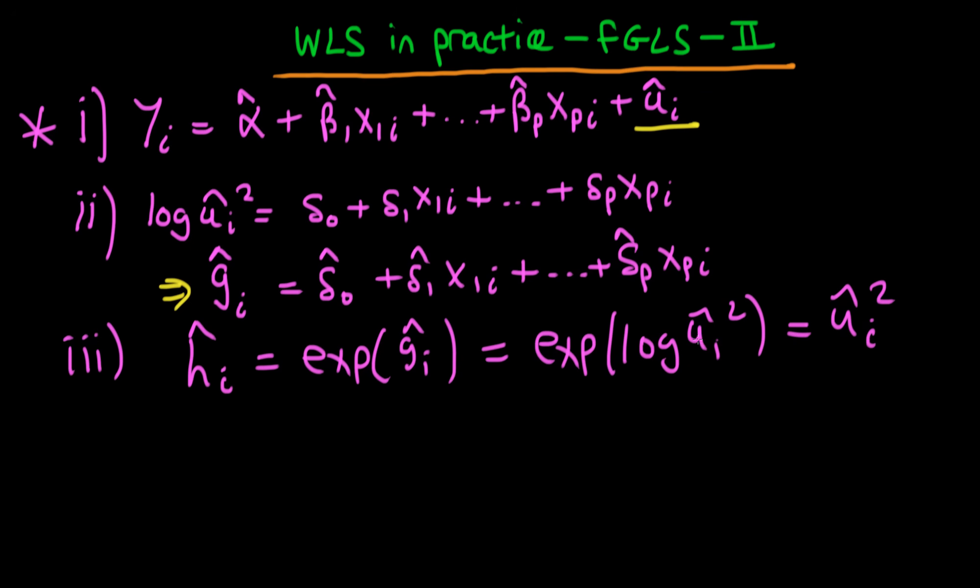You could argue why don't we just estimate ûᵢ² directly using some sort of exponential model? Well the answer is it's just a little bit more complicated, whereas we can avoid doing maximum likelihood estimation by taking the log of the dependent variable rather than taking the exponent of the independent variables.